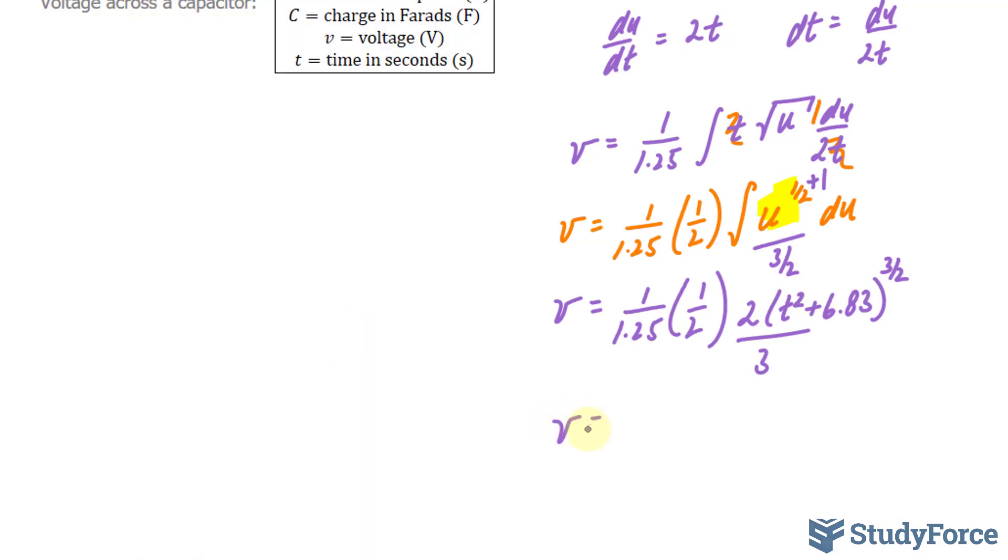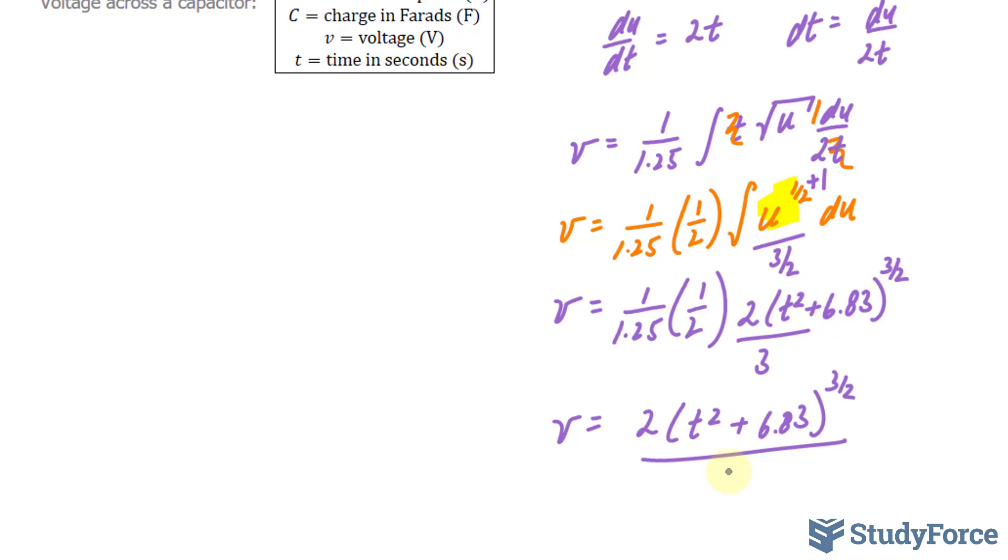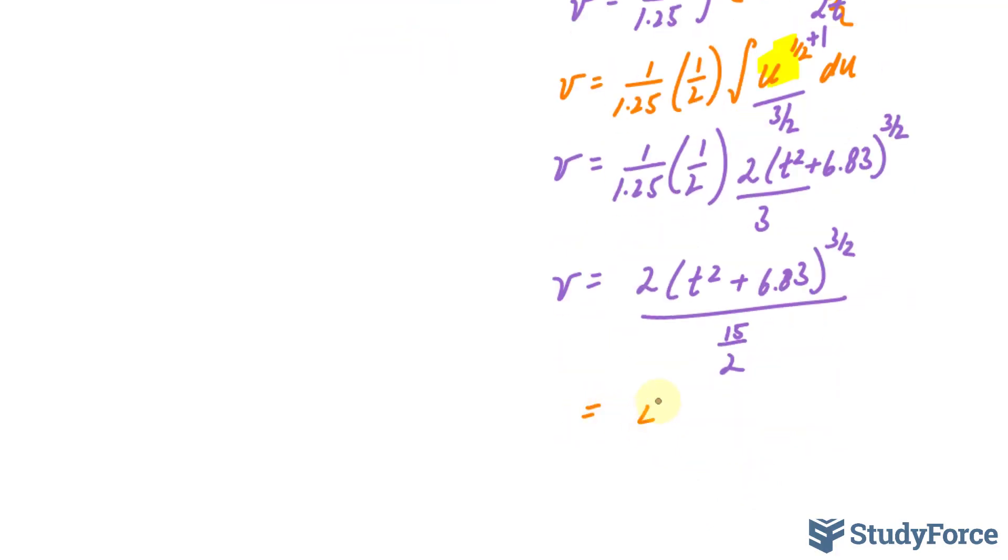So we have v is equal to 2 times t squared plus 6.83 to the power of 3 over 2 over, and that fraction was 15 over 2, this means that if we divide this with that, we'll end up with 4 times t squared plus 6.83 to the power of 3 over 2 over 15.